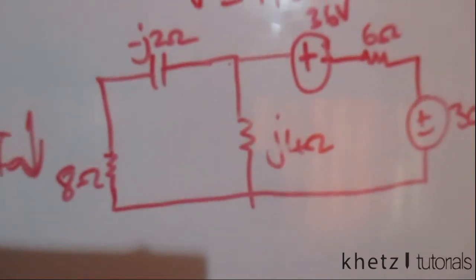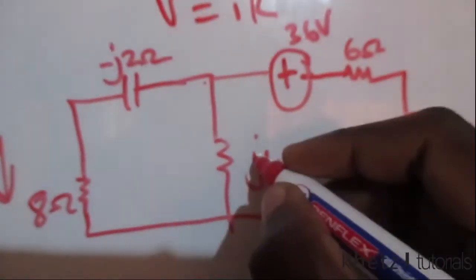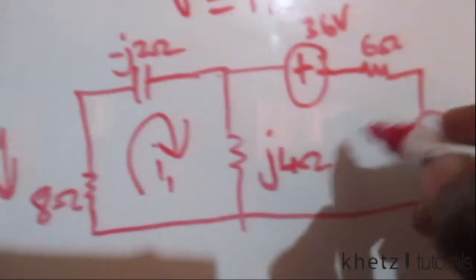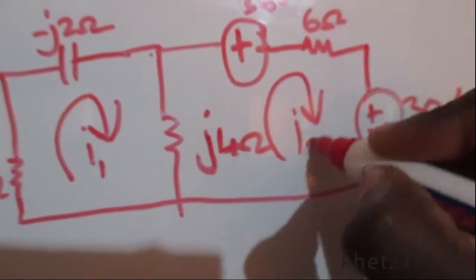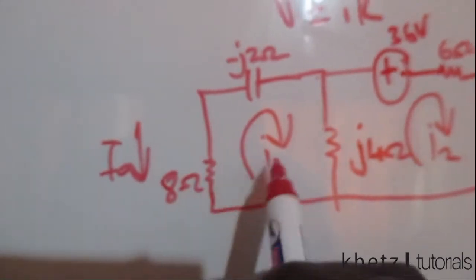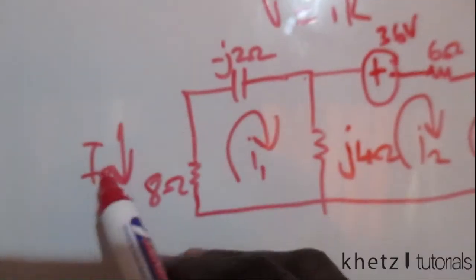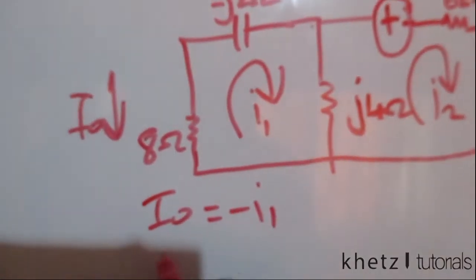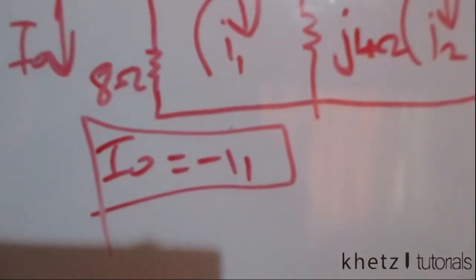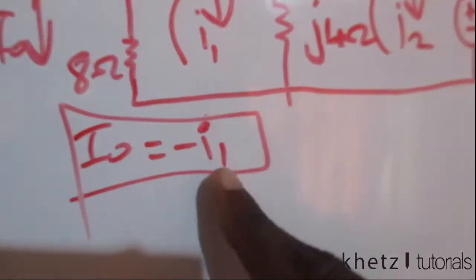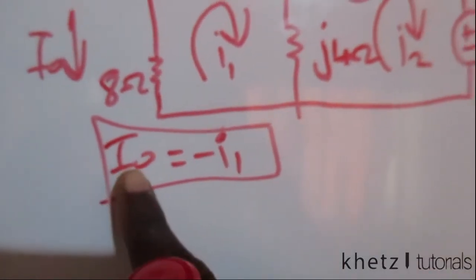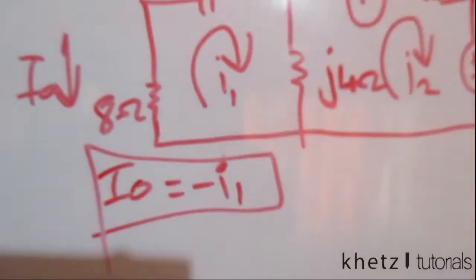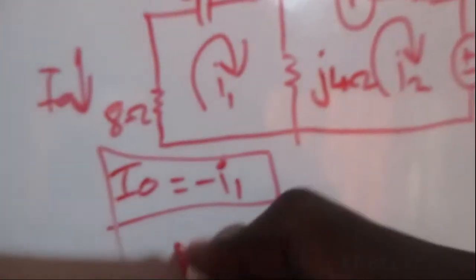Now we label the loops to identify the currents associated with each mesh. I'll call this one I1 and this one I2. Looking at the direction of I1, it goes in one direction while IO goes in the opposite direction — therefore IO equals negative I1. So to solve the problem, we need to find I1, and then negate it to get IO.